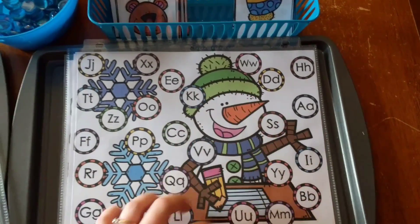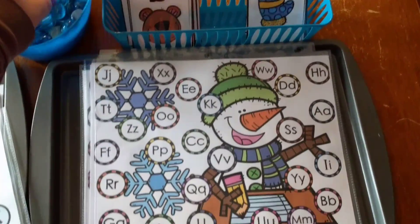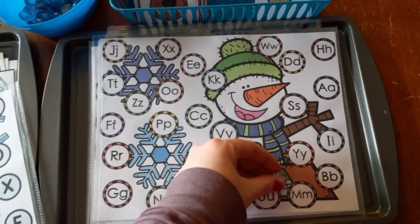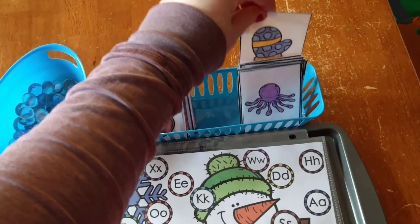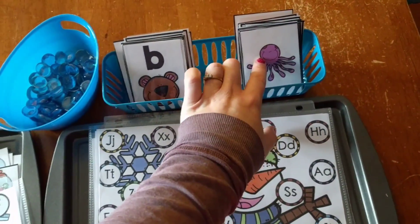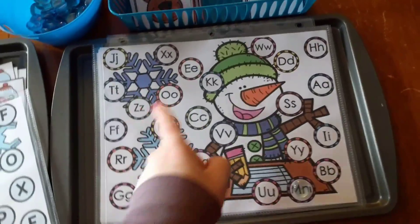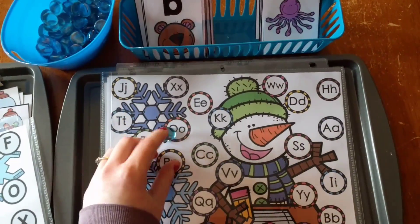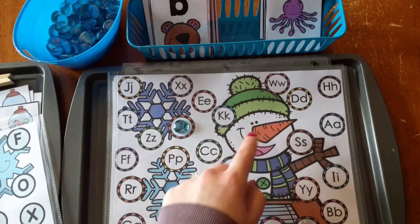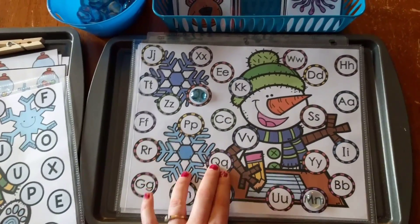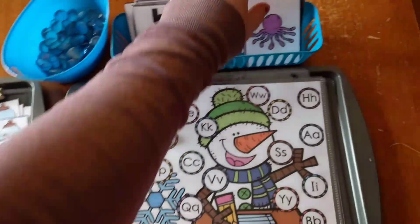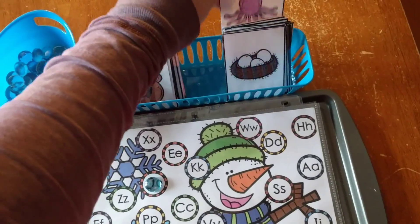Can you find the letter that says M, M? And he is going to find and cover up the M. Very good. All right, next one is Octopus. Octopus says A, A. Can you find the letter that says A, A? And the reason I did capital and lowercase on here was so that they could associate both letters with the same sound.